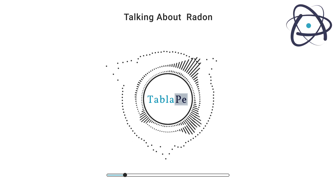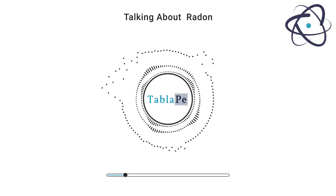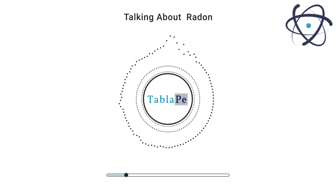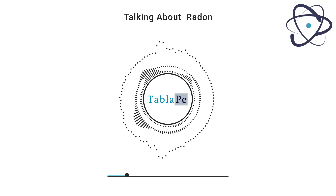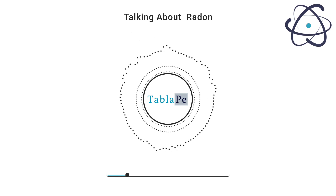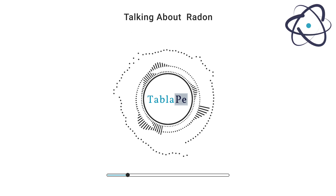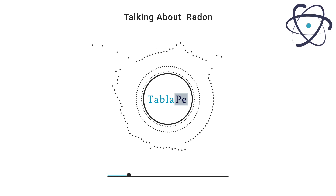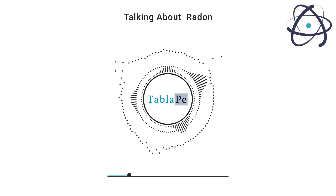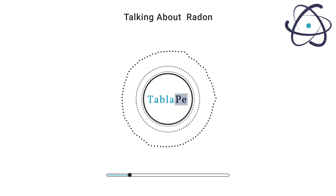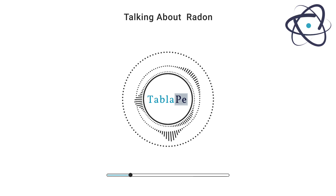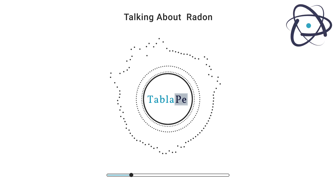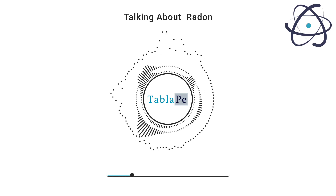He named this gas radon from the Latin word 'radius,' meaning ray, due to its emission of alpha particles. Radon belongs to the noble gases on the periodic table, alongside helium, neon, argon, krypton, and xenon.